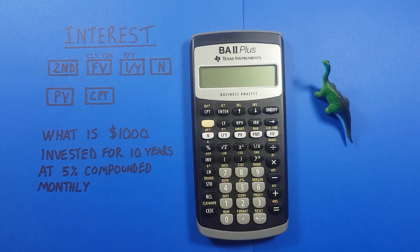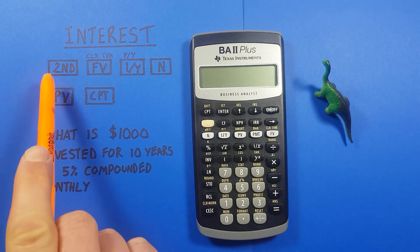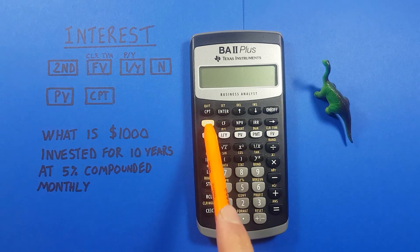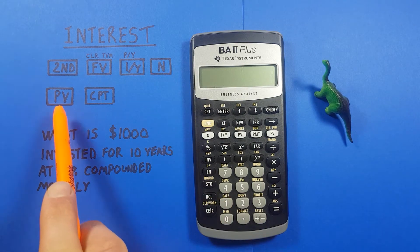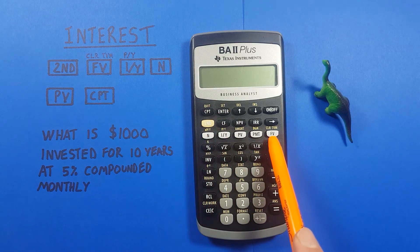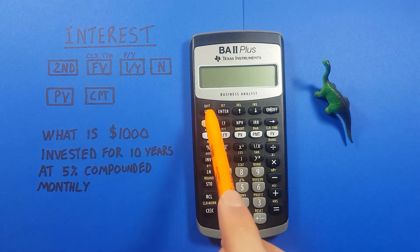Hello and welcome to HD Calcs. I'm Rick and today we're going to look at how we can calculate compound interest on the Texas Instruments BA2 Plus calculator. To do this we'll be using the second function key located here, as well as the TVM or time value of money keys located here, and the CPT or compute key located right up here.